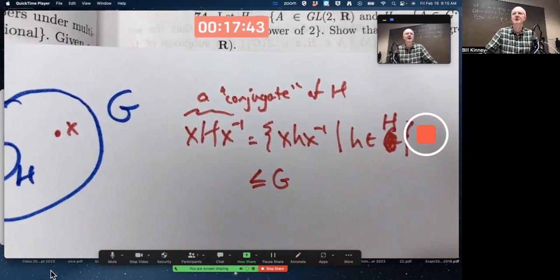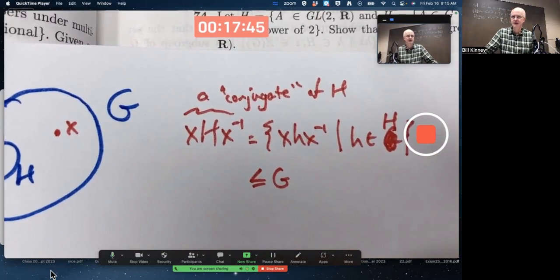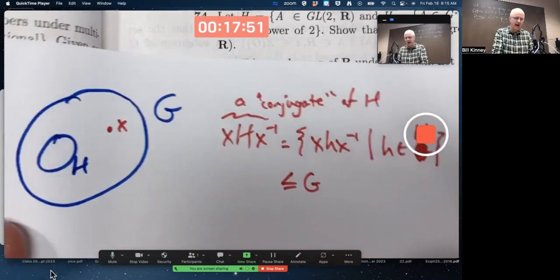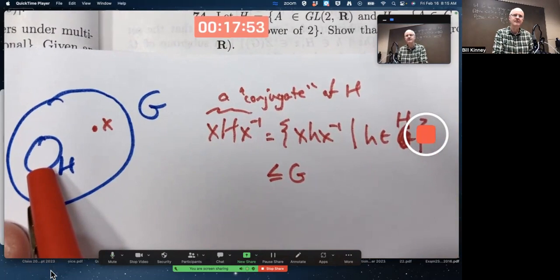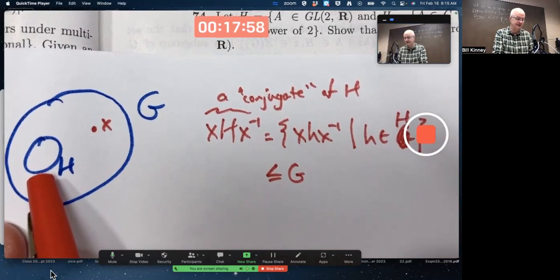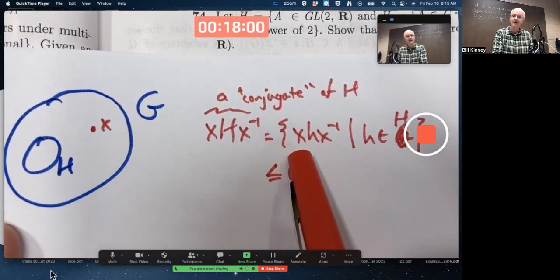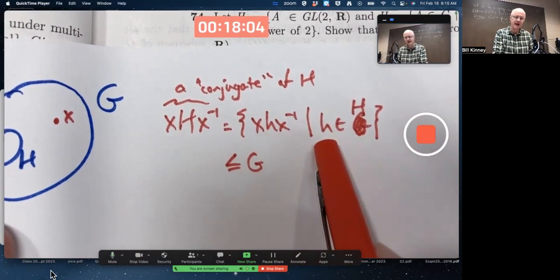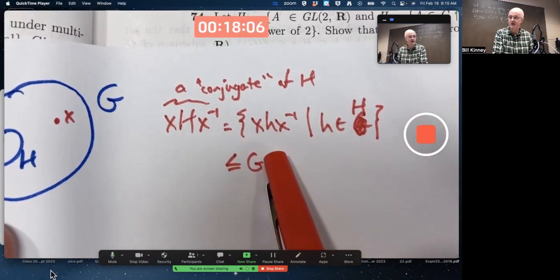Sometimes the conjugate of H equals H itself. In fact, if you think about it, it should make sense that if x were in H, then this set should equal H. Because if x is in H, then x times h times x inverse, as h varies over H, is always going to be in H as well, because H is a subgroup. So it's closed into multiplication and taking inverses.